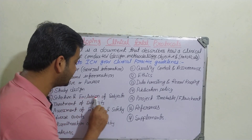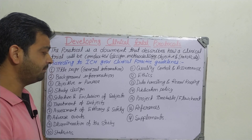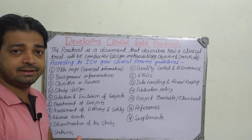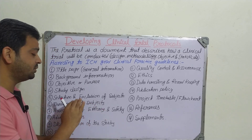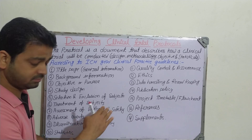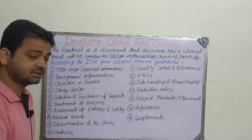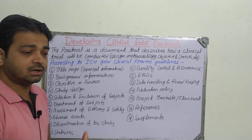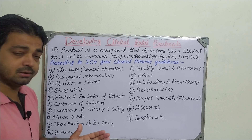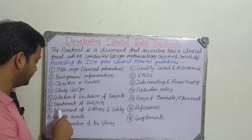The fifth one is selection and exclusion of the subject. For example, what is the subject — diabetes — and what kind of diabetes, type one or type two? Which ones you are selecting and which ones you are removing — those things have to be revealed. Then treatment of the subject: we have to give the drug to the human volunteer daily. How long the study is going to be, and how long the treatment is going to be — that has to be revealed properly.